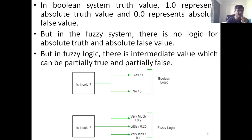In these kinds of scenarios, fuzzy logic comes into picture. In fuzzy logic there is an intermediate value which can be partially true or partially false, and that value actually represents the degree of truthness or degree of falseness. For example, the statement 'it is cold' — if we say just yes or no, that becomes Boolean algebra where only two values exist.